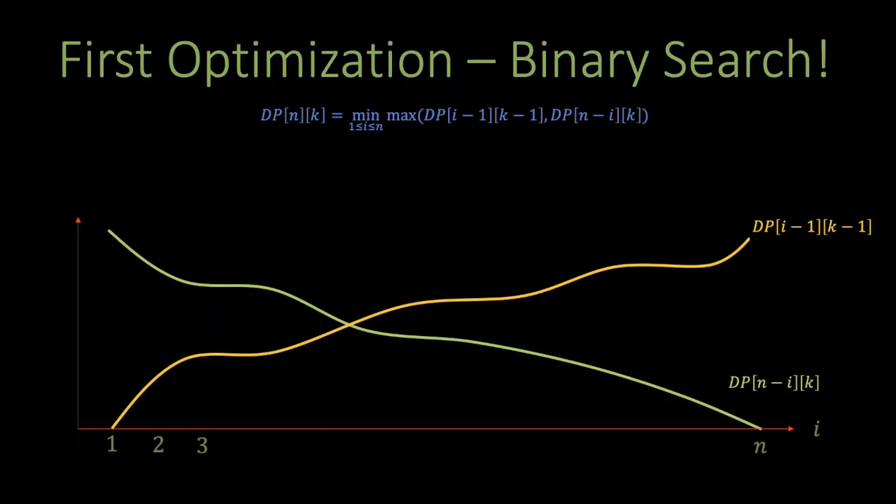Alright, we're now ready to discuss the dynamic programming speedup. Remember that our objective is to find the intersection point of both DP[i-1][k-1] and DP[n-i][k], in a time faster than O(n). Can you think of a way to use binary search to do that? Take a minute and think how you can use the monotonicity of DP[i-1][k-1] and DP[n-i][k] to find their intersection very quickly. Now, I'm sure if you spend enough time, you would get the idea of the binary search.